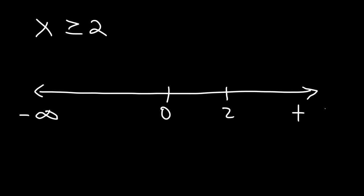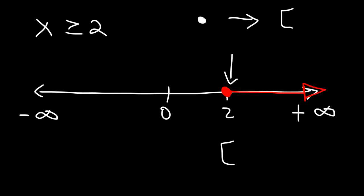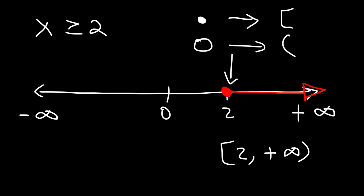On the left we're going to have negative infinity, as usual, and positive infinity on the right. Now this time, it's equal to or greater than 2, so we need to use a closed circle, as opposed to an open circle. But because it's still greater than 2, we're going to shade towards the right. To represent this solution in interval notation, we're going to use brackets instead of parentheses to indicate that 2 is included. So anytime you have a closed circle, it's always associated with a bracket. An open circle will always be associated with parentheses. And infinity is always associated with parentheses. So it's going to be from 2 to positive infinity — [2, ∞). And that's the answer.